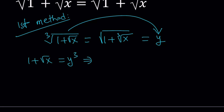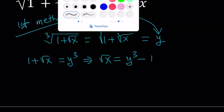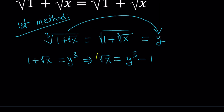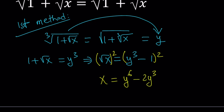Let's go ahead and isolate square root of x from here. Square root of x becomes y cubed minus 1. Now we want to get rid of all the radicals, so let's square both sides. That gives us x equals y to the 6th minus 2y cubed plus 1. So that is the x value — let's save it.